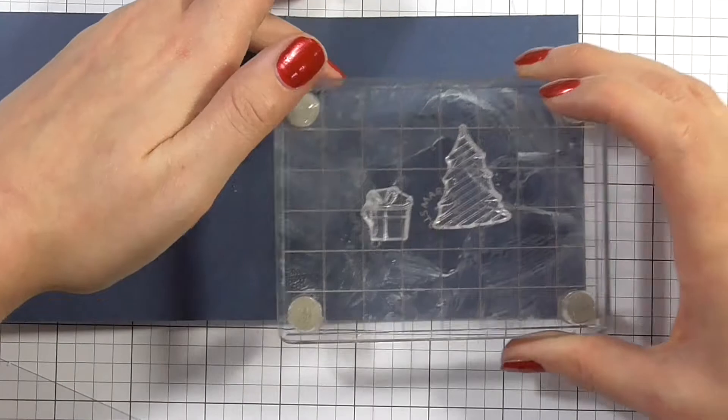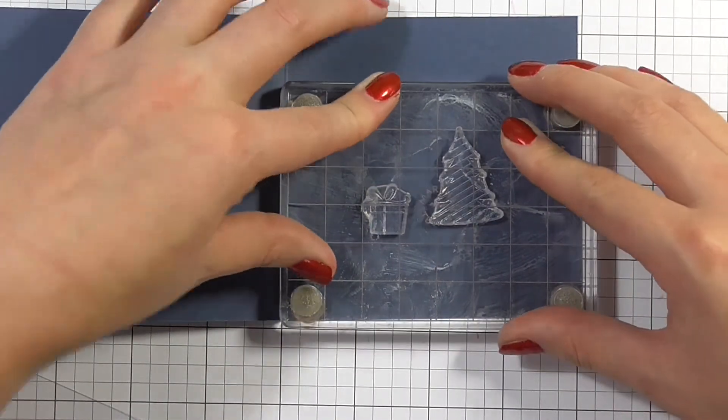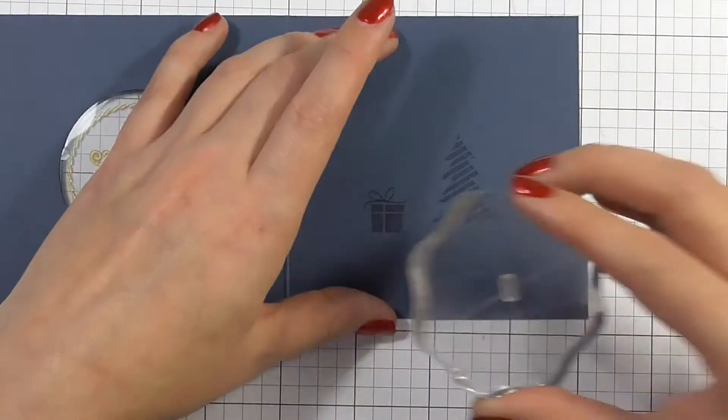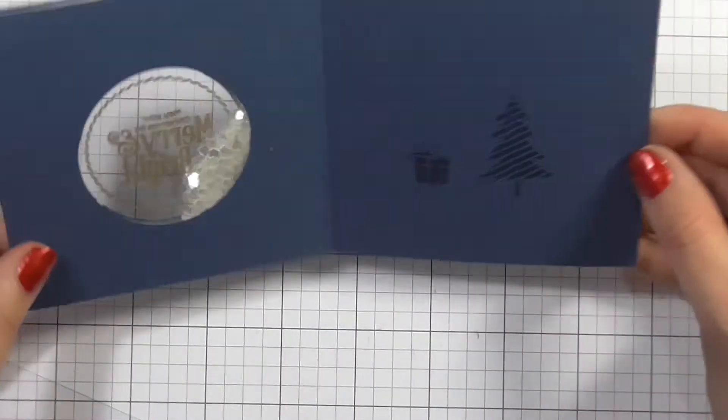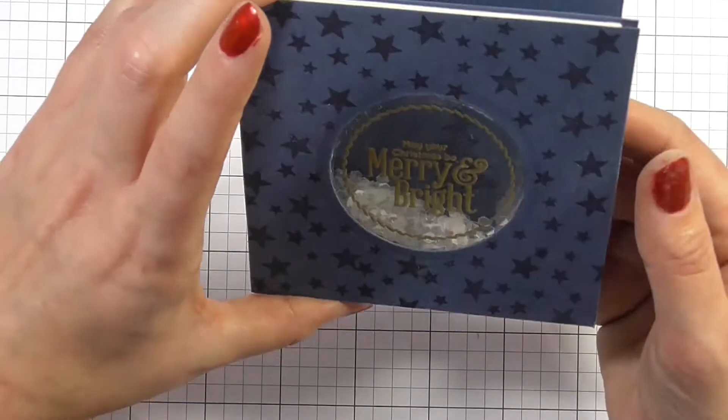So again I'm gonna go for that watermark look and I'm gonna stamp the little tree and the present from the same stamp set. So excuse how messy my stamp block is there, I think I had some white pigment ink that I haven't cleaned off it properly.